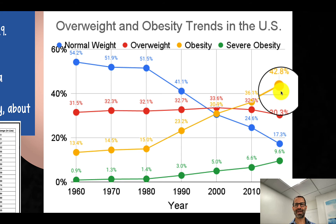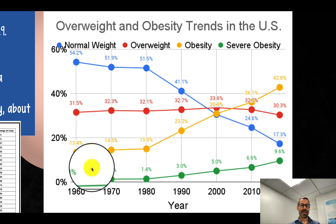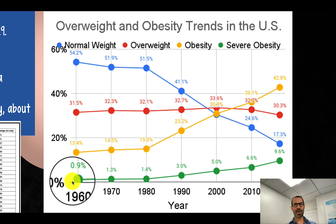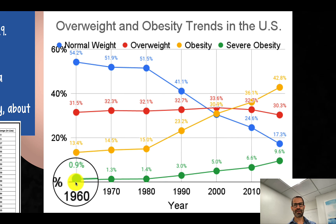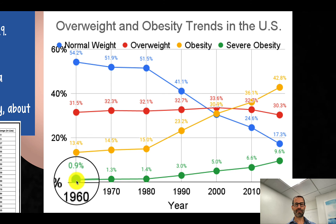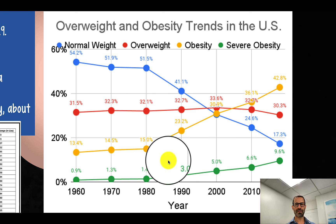So that's roughly a three- to four-fold increase in obesity. For severe obesity, the increase goes from less than one percent to almost ten percent — a nine-fold increase over time.